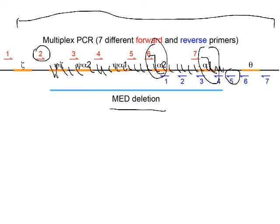Obtaining that PCR product tells us that the person had the Mediterranean deletion in their genome. To use multiplex to detect deletions, we first have to know what the deletions are so we can plan primers flanking the edges. We had to know that the Mediterranean deletion went from here to here so we could design primers that would flank it. Fortunately, there are only a small number of deletions that occur at reasonable frequency.